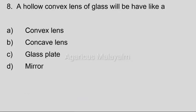Eighth question: A hollow convex lens of glass will behave like a — option A: convex lens; option B: concave lens; option C: glass plate; option D: mirror. Correct answer: option C, glass plate.